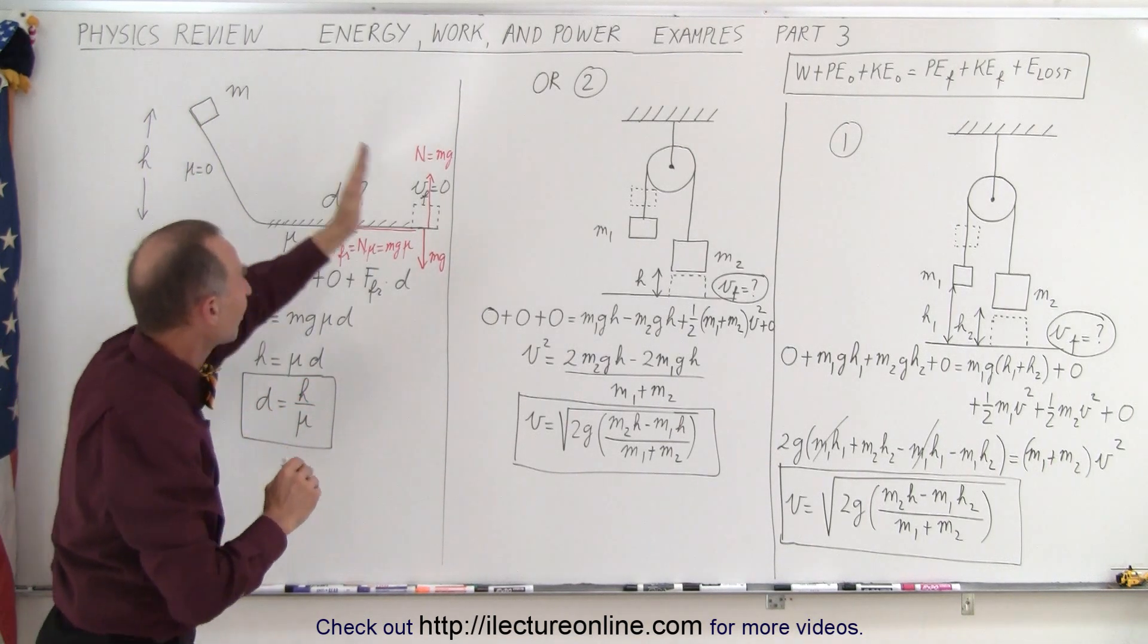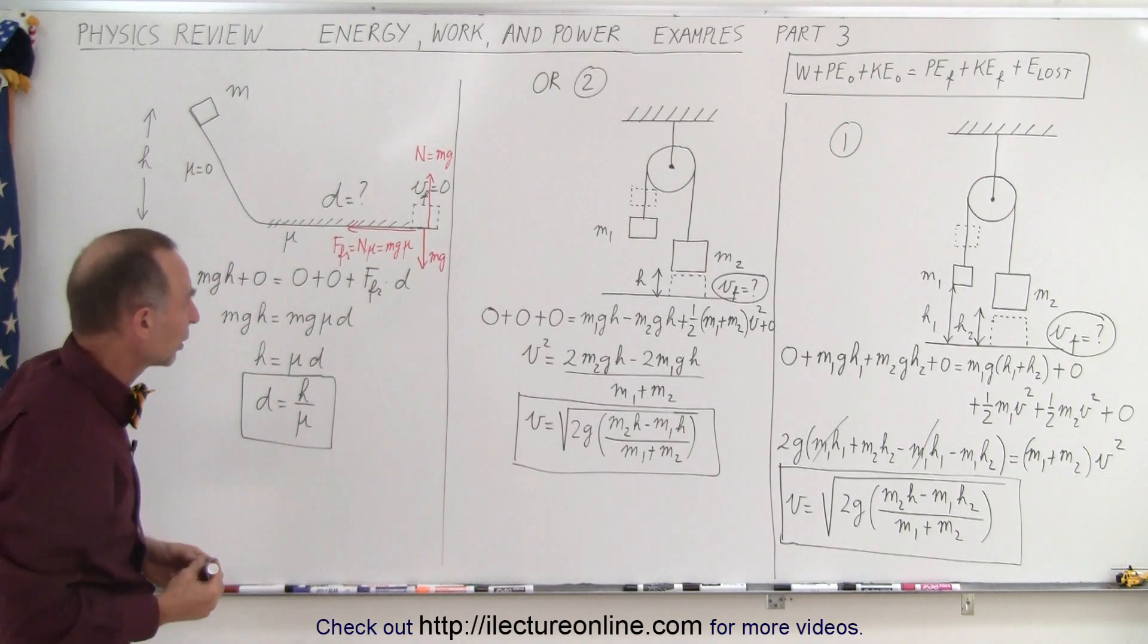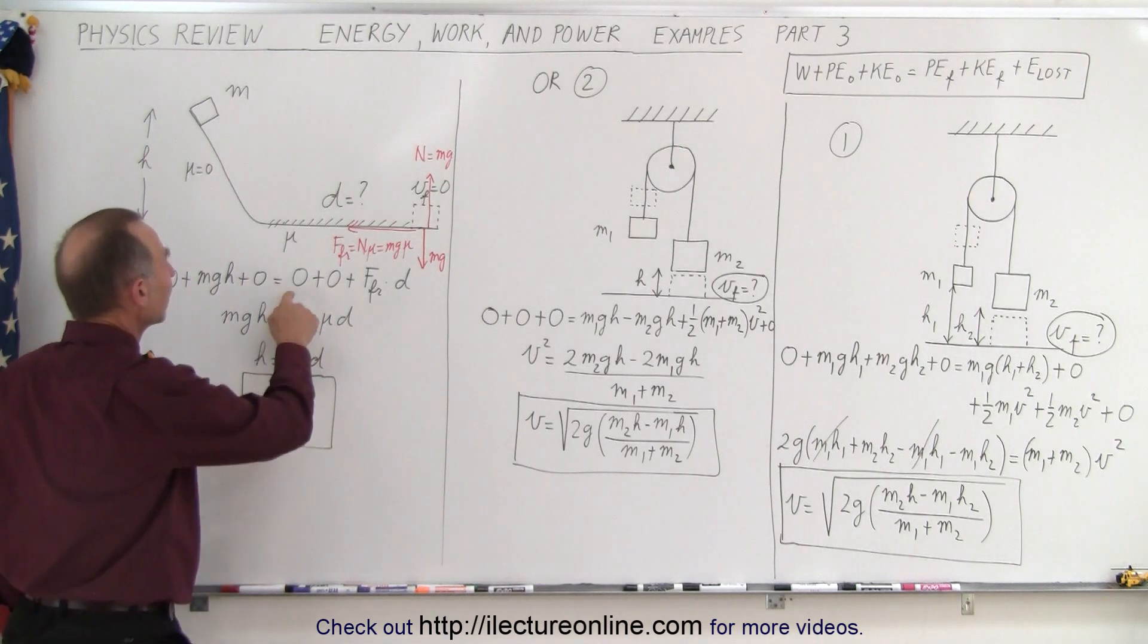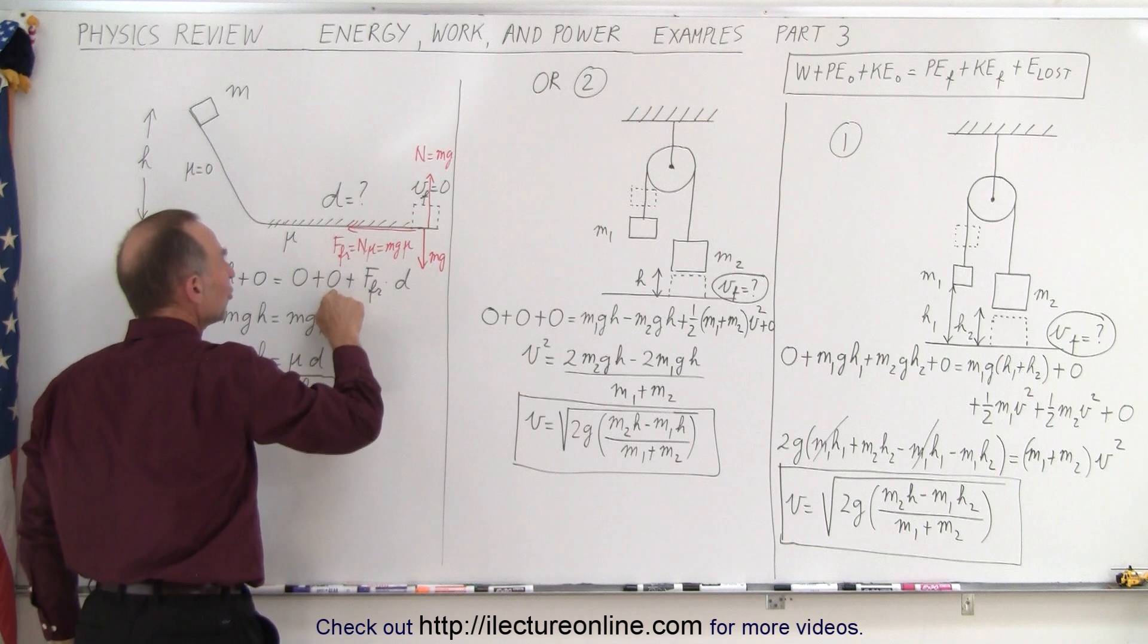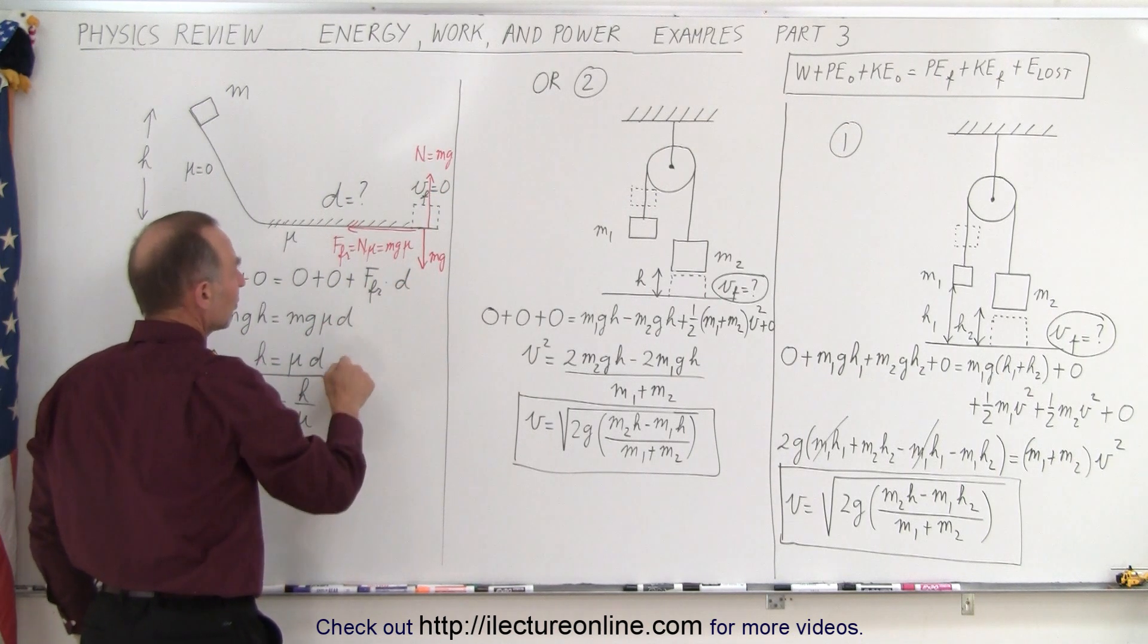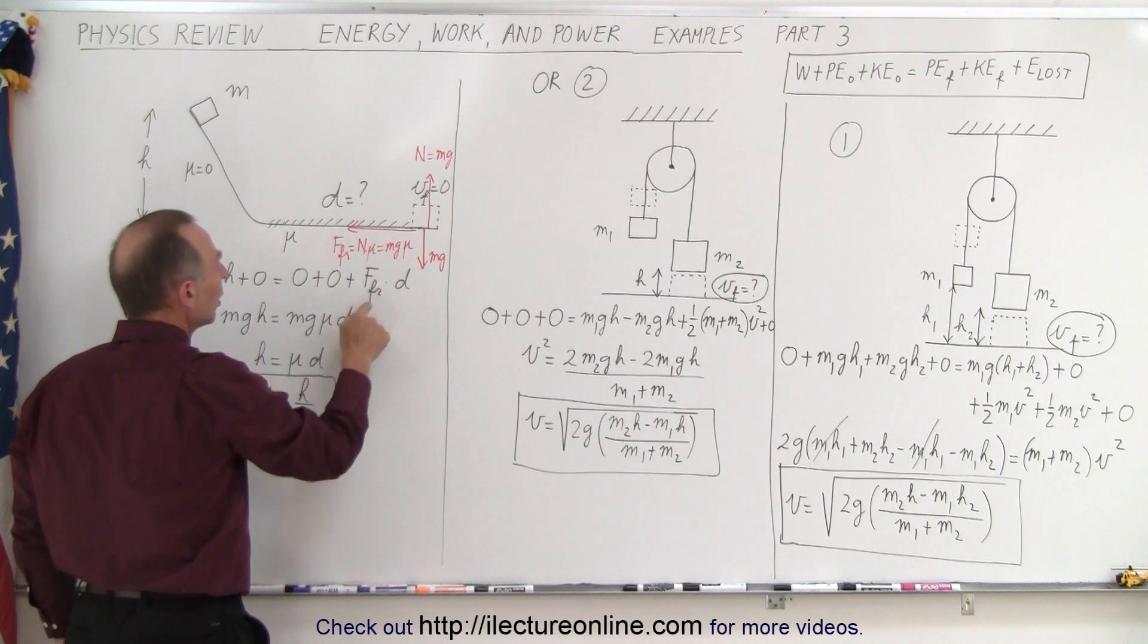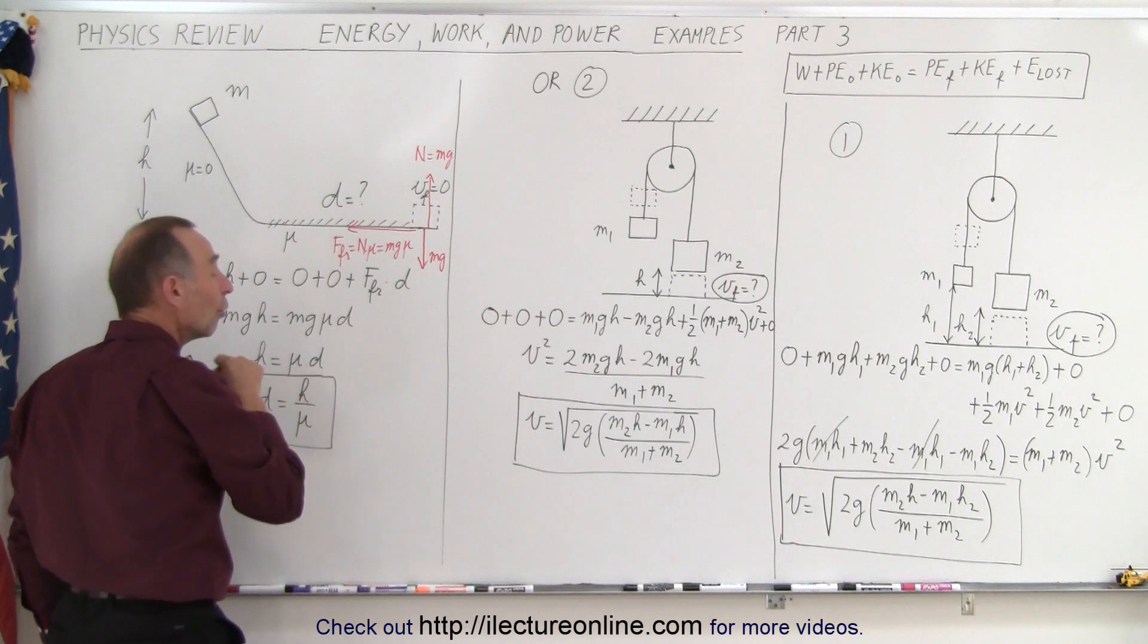Of course if there's friction we have to deal with that. We can say at the end it has no potential energy because the height is zero, it has no kinetic energy because it's not moving, and it lost energy: force friction times distance. Force friction is mg mu, distance is d. Solve this for d, you get h over mu.